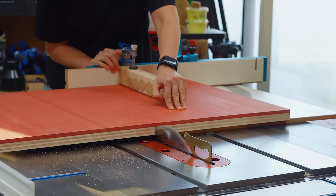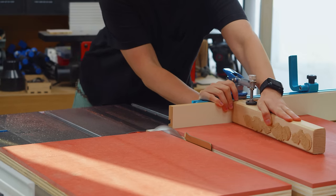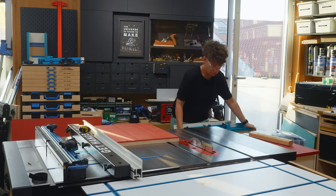I then divided between what's going to be the main table and the extension wing. I removed the sled and cut the extension to its final width.